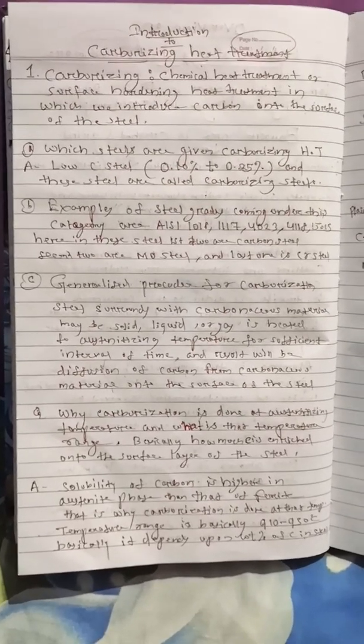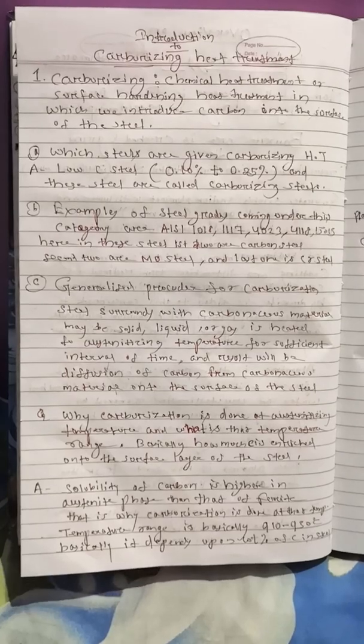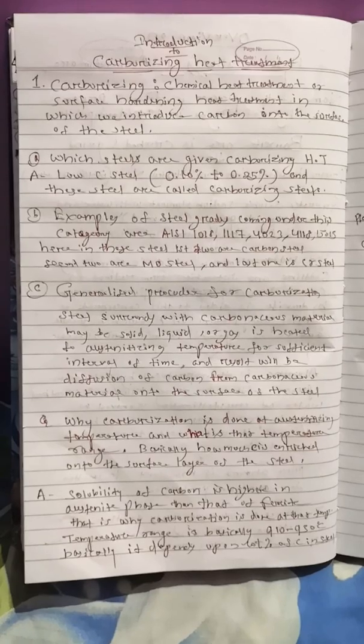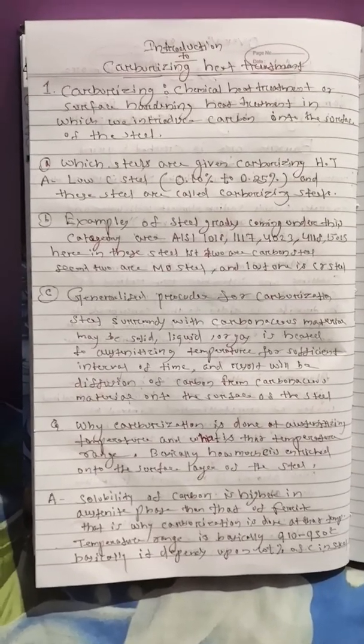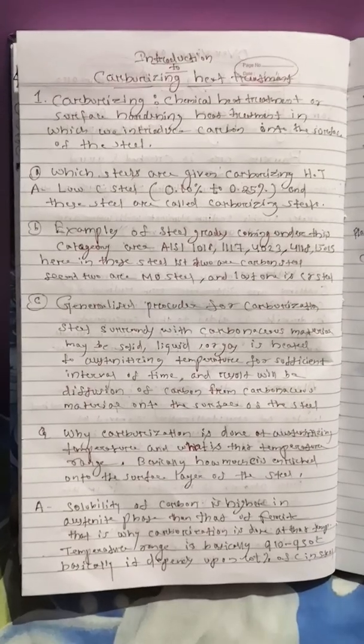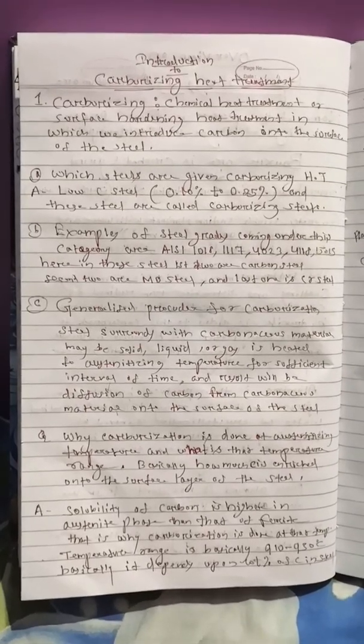Then the generalized procedure for carburizing heat treatment. In case of carburizing heat treatment, the steel surrounded by carbonaceous materials in form of either solid, liquid, or in form of gas is taken to the austenitizing temperature for sufficient interval of time. During this process the carbon starts diffusing from the carbonaceous material to the surface of the steel.